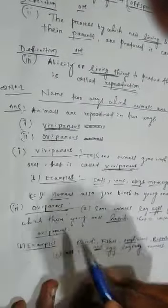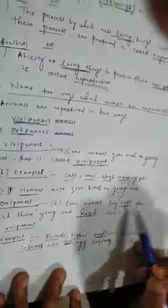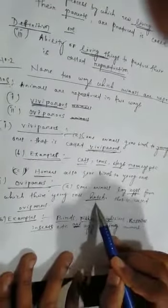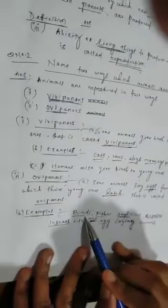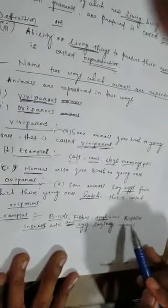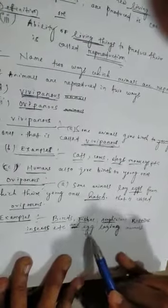Second, oviparous. Some animals lay eggs from which their young ones hatch. That is called oviparous. Examples: birds, fishes, amphibians, reptiles, insects, or egg-laying mammals.